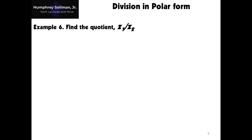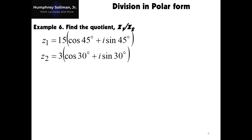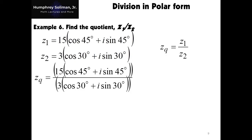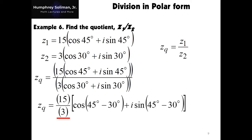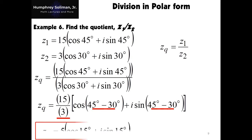The division of complex numbers in polar form is not so different from multiplication. Example number 6: z1 equals 15 times the quantity cosine 45 degrees plus i times sine 45 degrees, and z2 equals 3 times the quantity cosine 30 degrees plus i times sine 30 degrees. We will call the quotient zq. In dividing complex numbers in polar form, we divide the moduli of z1 and z2, then subtract the arguments. This gives us zq equal to 5 times the quantity cosine 15 degrees plus i times sine 15 degrees.